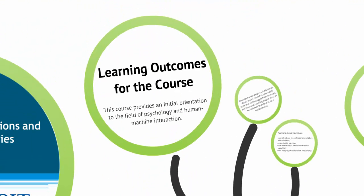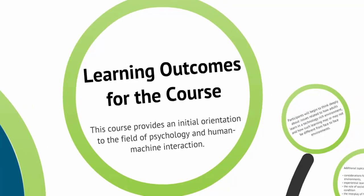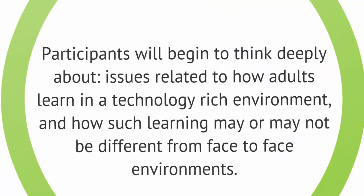Here are the identified learning outcomes for the course. One of the goals is to provide an initial orientation to the field of psychology and human-machine interaction, looking at general principles of psychology and how they relate to the digital world. Learners will begin to think deeply about how adults learn in a technology-rich environment and how that learning may or may not differ from a face-to-face environment.